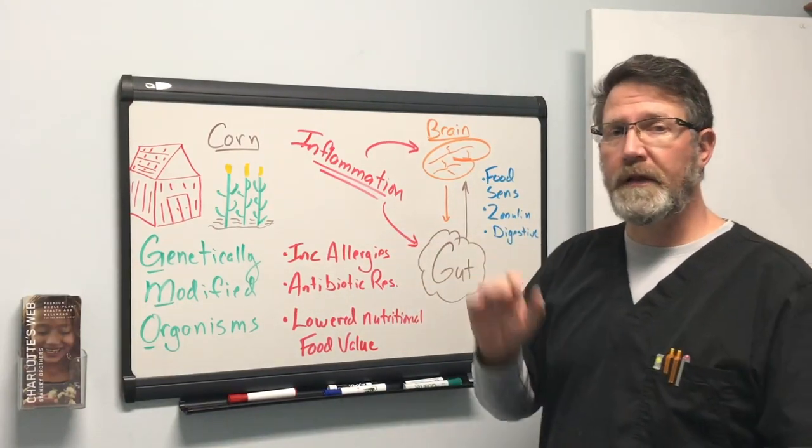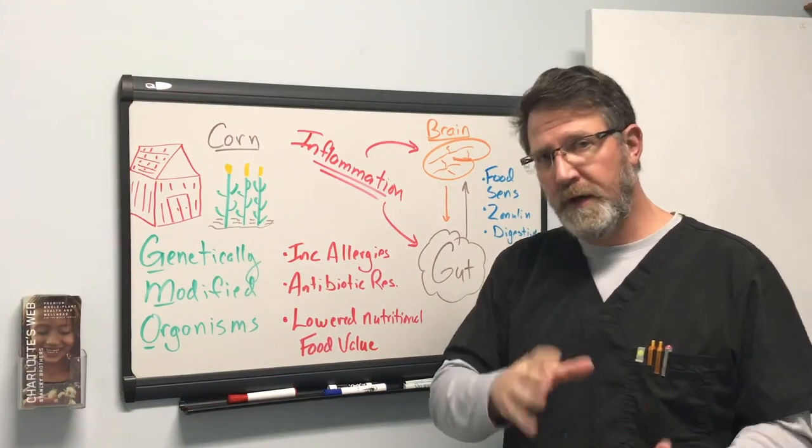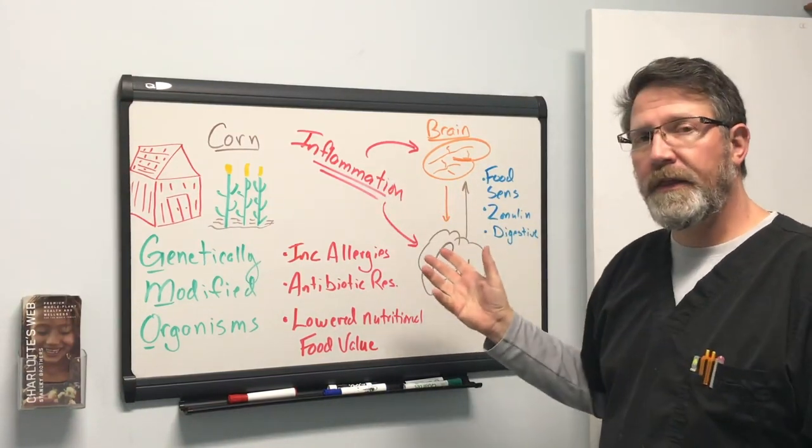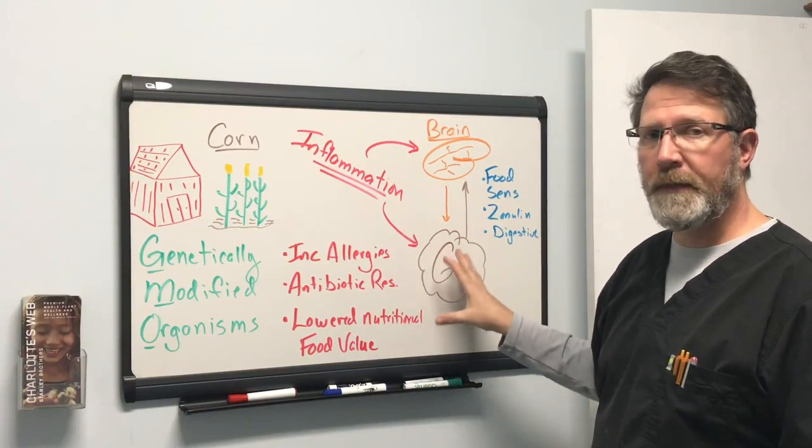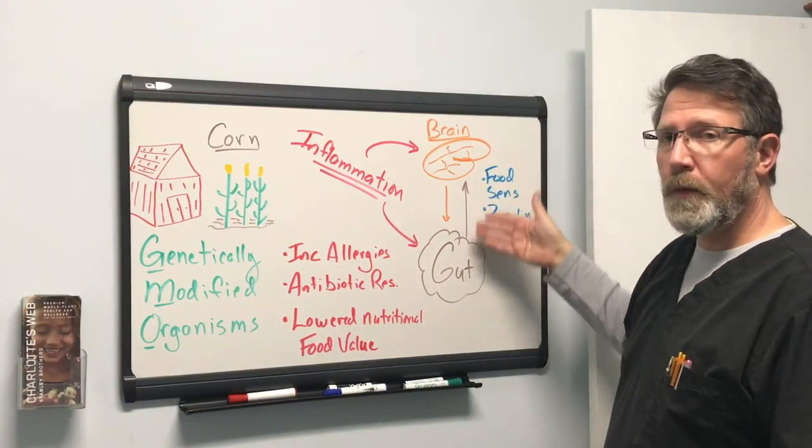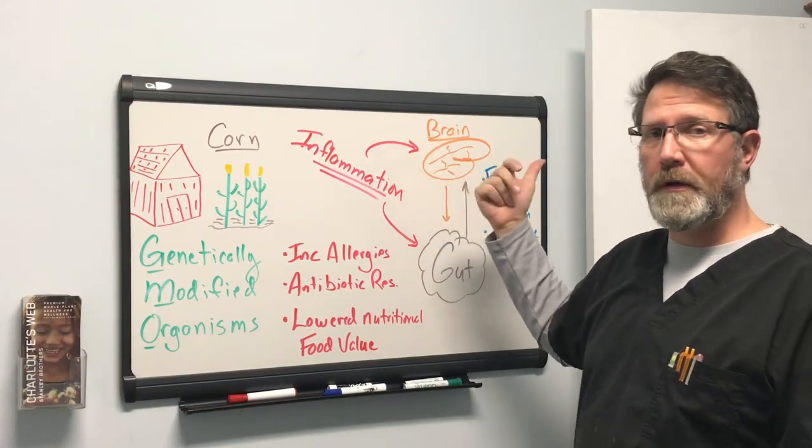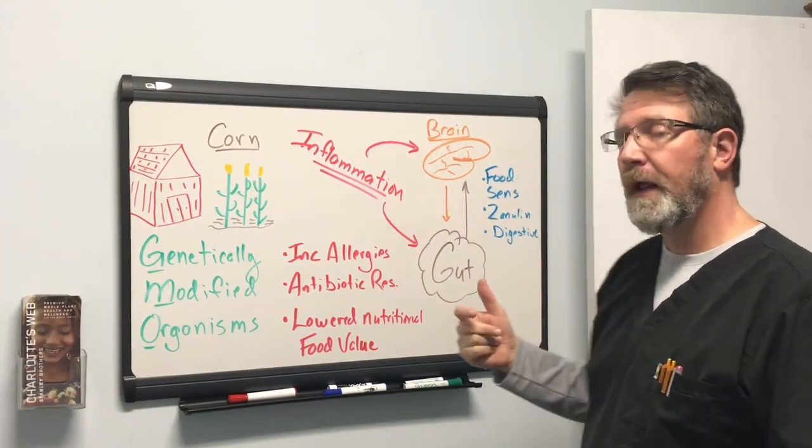But let's focus specifically on the gut-brain relationship as we've done in other videos. That genetically modified thing is going to start to cause inflammation in the gut. And we know that there's a relationship with the gut and the brain. If there's inflammation in the gut, there will eventually be inflammation in the brain and vice versa.